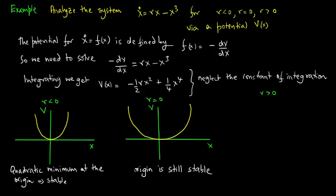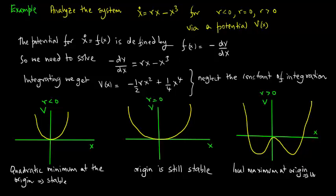For r greater than zero, we get something more complicated. We have a local maximum at the origin implying an unstable fixed point, and a symmetric pair of local minima implying stable fixed points.